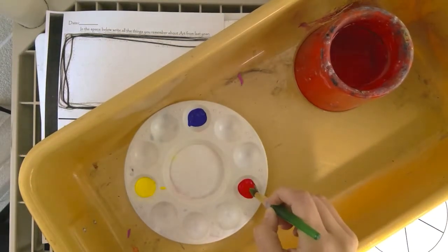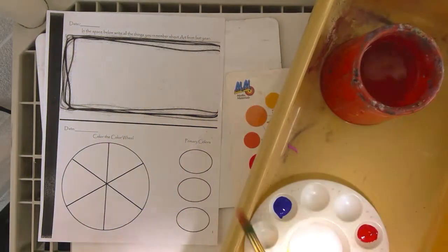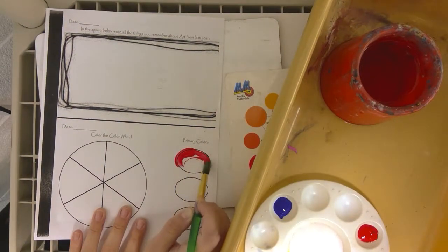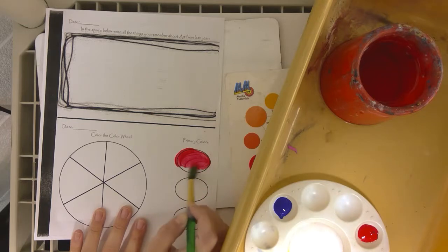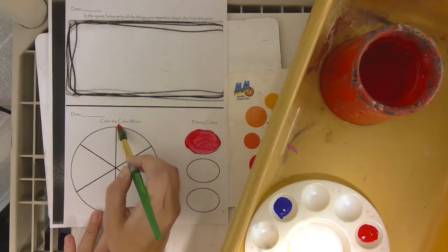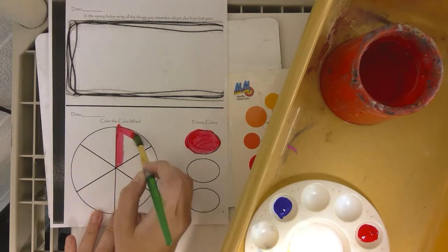You're just going to dip your paintbrush into the red, fill your primary color oval with red, then you're going to fill in one piece of your pie. Just one.